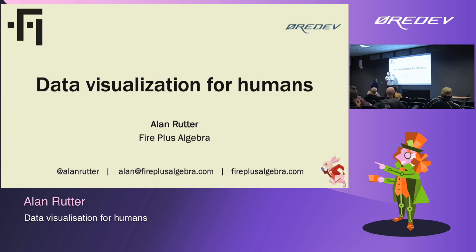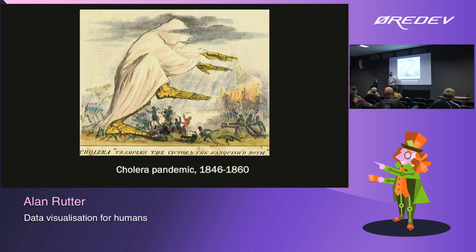They had an idea that cholera was spread through the air — through what they called miasma — clouds of bad air that would float between people, between communities, and between countries. Their visual idea of cholera looked like a cartoon from a newspaper at the time: a cloud of death floating around the world. Then in the 1850s, there was a specific outbreak of cholera in Soho, London, and a doctor called John Snow decided to take a more scientific approach.